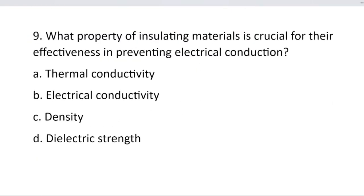Question number 9. What property of insulating materials is crucial for their effectiveness in preventing electrical conduction? The correct answer is option D, dielectric strength.